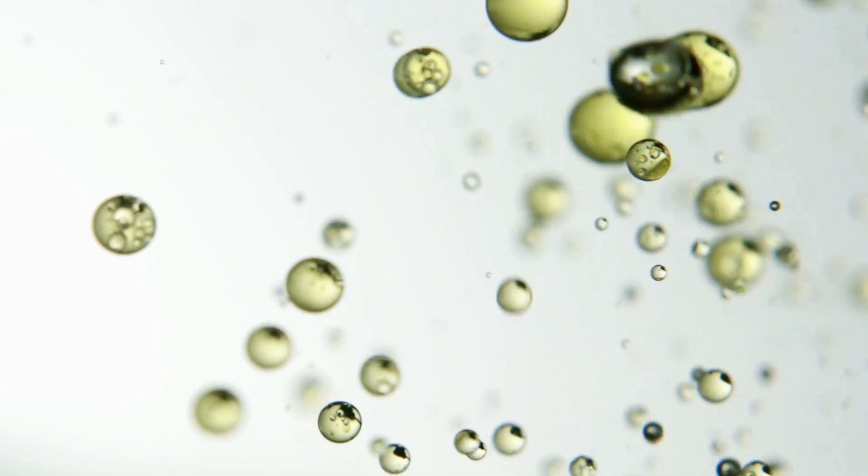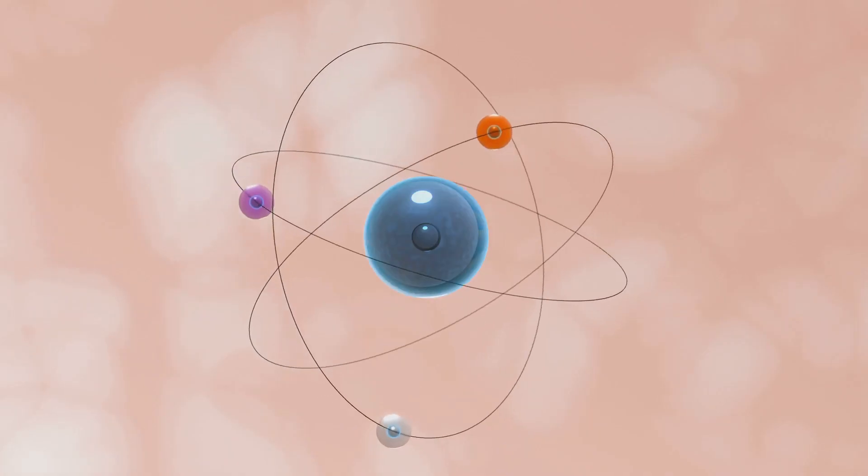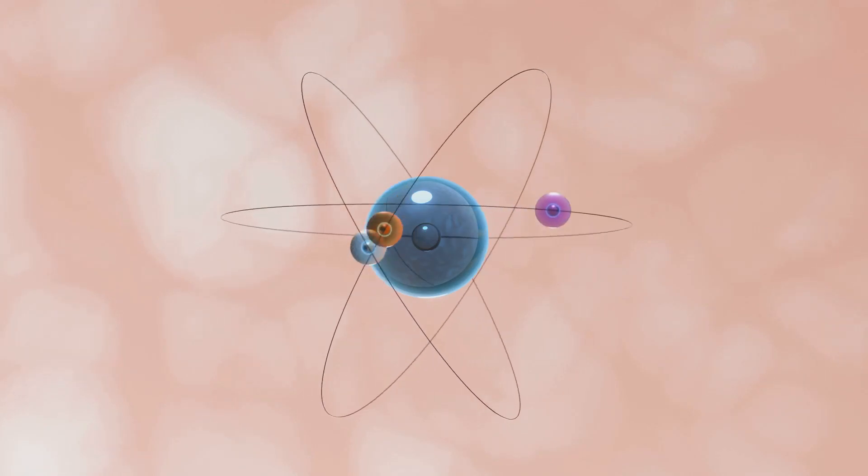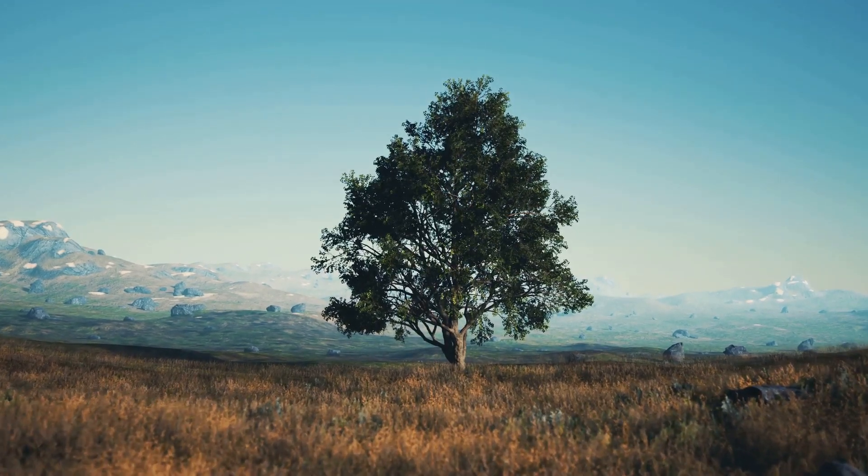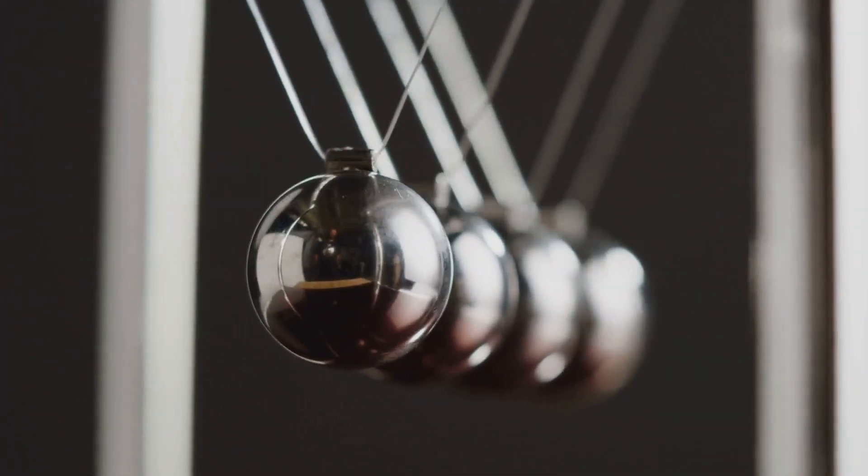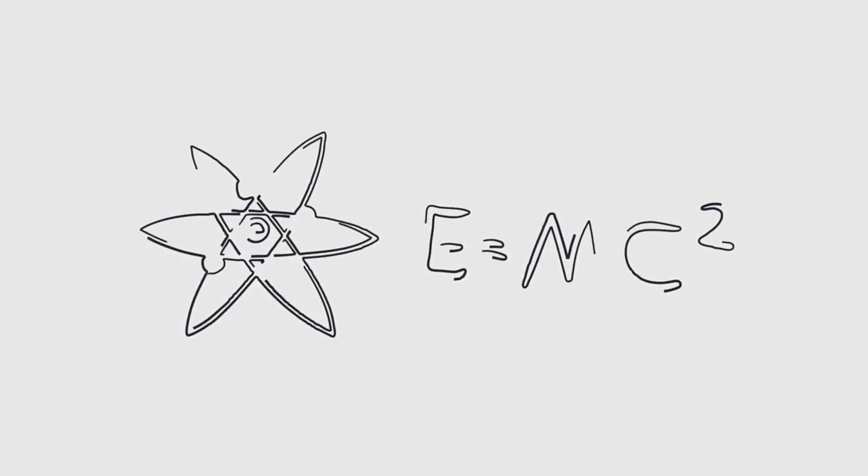These strings are about 10 to the power of minus 33 cm in length. If you blew an atom up to the size of the solar system, these strings would be like a single tree in comparison. Because strings have length, not merely points, you can apply both quantum mechanics and relativity in a single framework, so the theory claims.